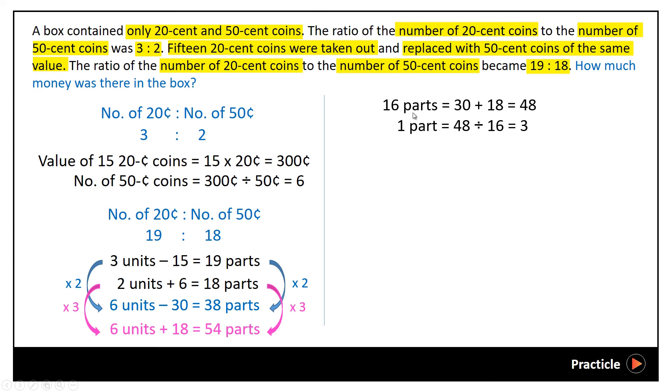So now we know that 1 part actually represents 3 coins. So this is not the value, this is the number of coins. Hence, in order to find the amount of money in the box, all we need to do is to find the number of coins. In this case, we find the number of 20-cent coins in the end by taking 19 times 3 and then we multiply it by the value, so the value will be 20 cents.